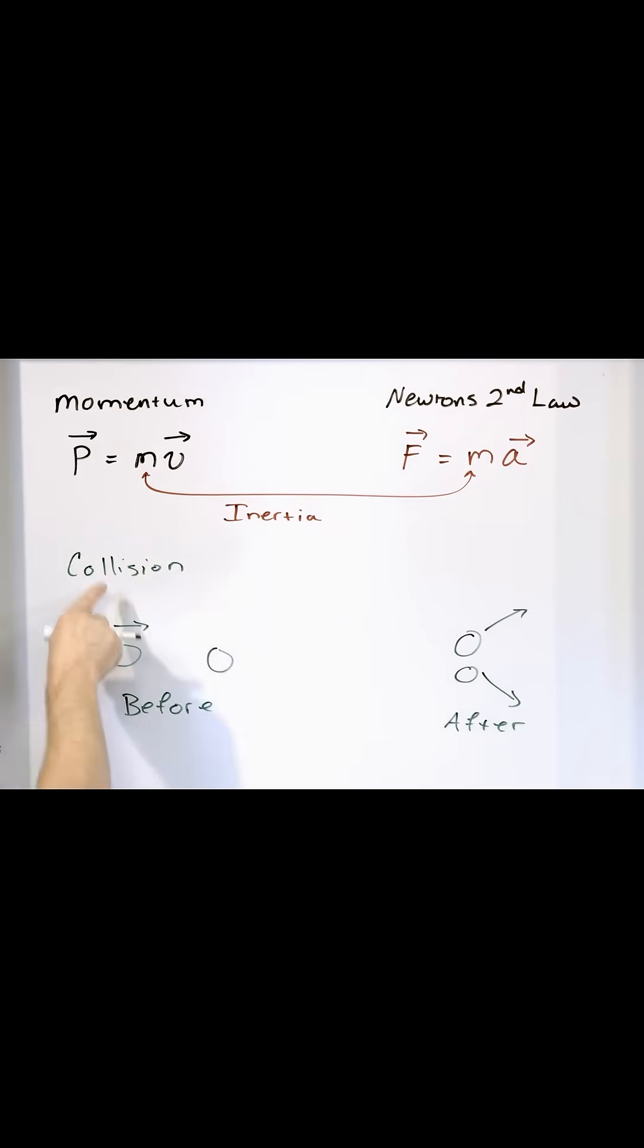This particle has some momentum before the collision, its mass times its velocity. And this particle has some momentum, its mass times its velocity. If it's not moving, then the velocity is zero and there's no momentum. The momentum has not only a number, but it has a direction associated with it.